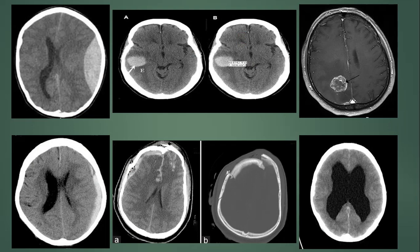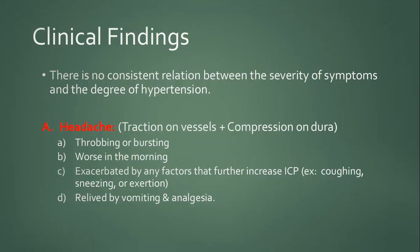Examples of pathologies causing raised intracranial pressure include traumatic causes such as epidural hematomas, subdural hematomas, subarachnoid hemorrhages, depressed fractures, and cerebral contusions. There can also be intracranial lesions like abscesses or brain tumors, and hydrocephalus. These are the main pathologies that raise intracranial pressure.